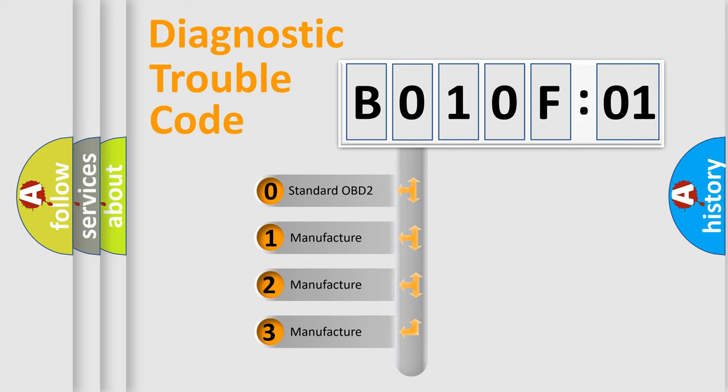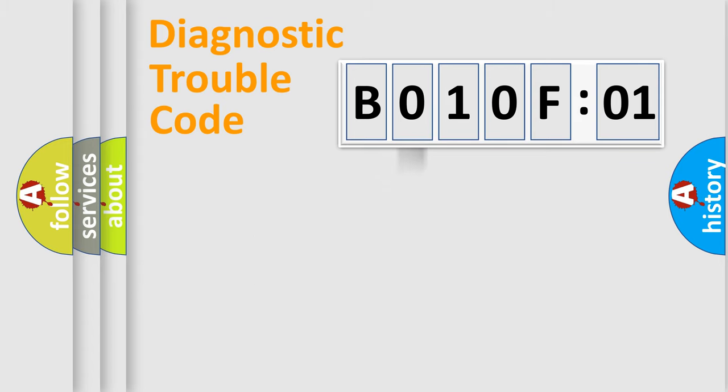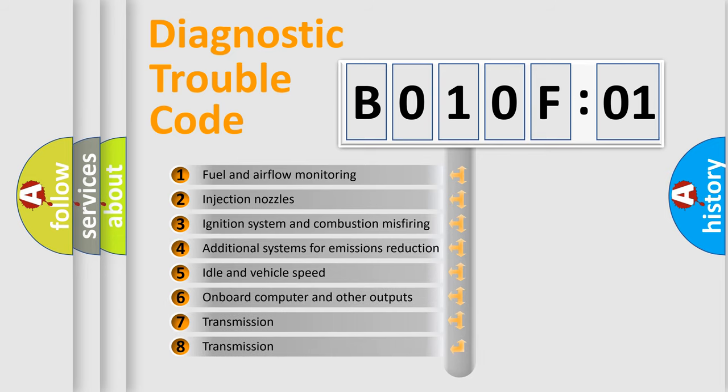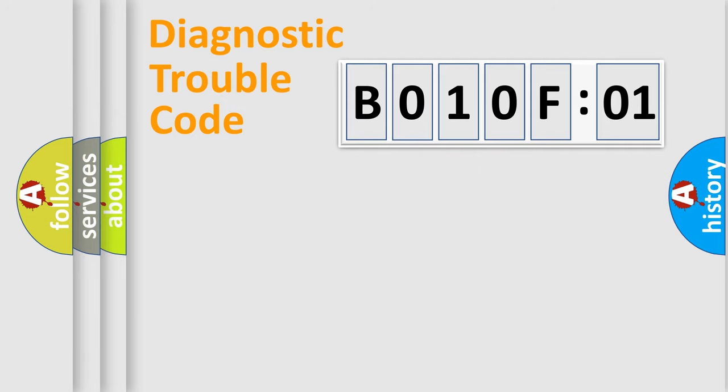If the second character is expressed as zero, it is a standardized error. In the case of numbers 1, 2, 3, it is a manufacturer-specific error. The third character specifies a subset of errors. The distribution shown is valid only for the standardized DTC code. Only the last two characters define the specific fault of the group.